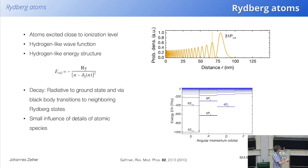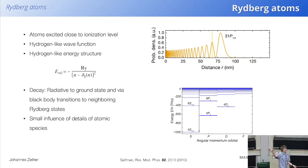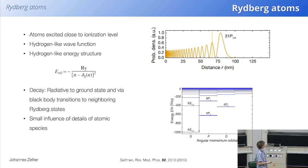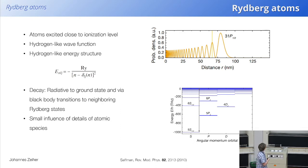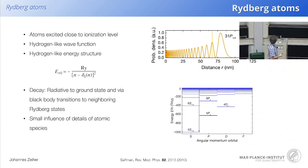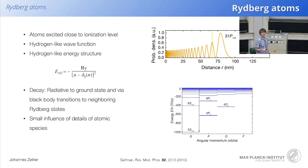If you take a valence electron from an alkali atom and move it very far out, it will see a single charged core. The further away it is, the more the core looks like a proton, so you get hydrogen-like properties. The energy levels have exactly the same form as hydrogen with a small correction called the quantum defect — delta_lj — so it's a hydrogenic spectrum with a small correction.